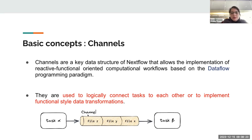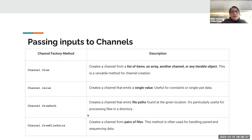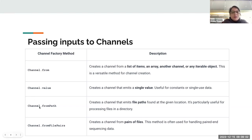When you need to pass input to your process, you have to pass it through channels. Depending on the data you have: if you have a list of items, an array, another channel, or any iterable object, use channel.from; if you have a single value, use channel.value; if you have a file or path, use channel.fromPath; and for paired FASTQ files, use channel.fromFilePairs.